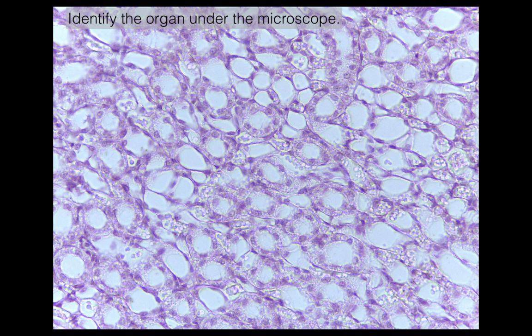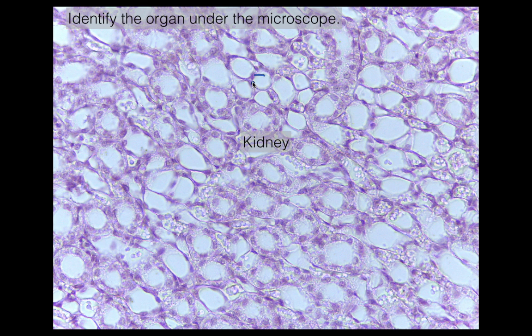You should have come up with the answer: kidney. That's the organ. The region of the kidney would be the medulla, and the reason you know that is first of all because you do not see any renal corpuscles. But specifically what you do see here are the tiny little loops of Henle, and these are going to be tubes that are lined with simple squamous.